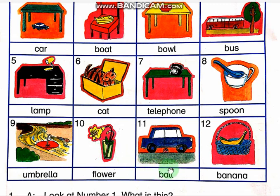Next is a ball. What is this? It is a ball. What color is it? It is pink. It is a pink ball. Where is the pink ball? It is under the blue car.